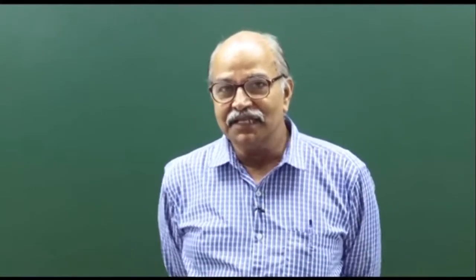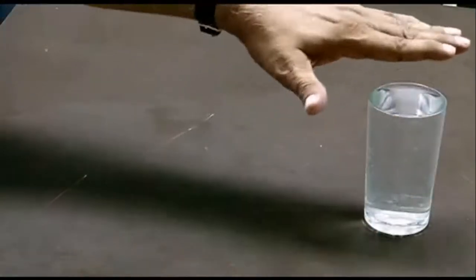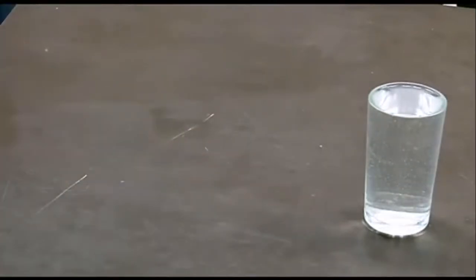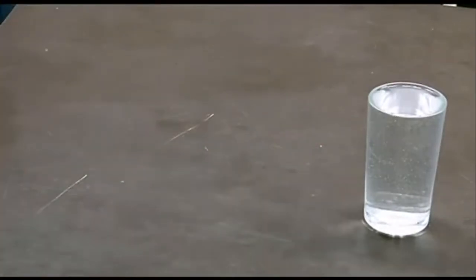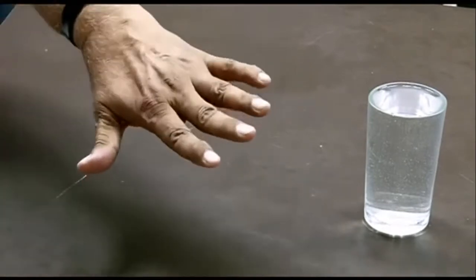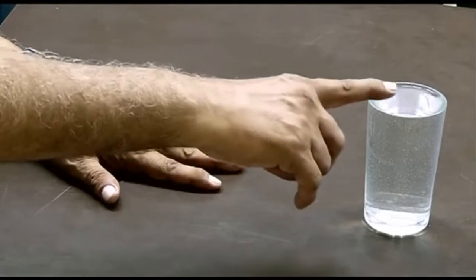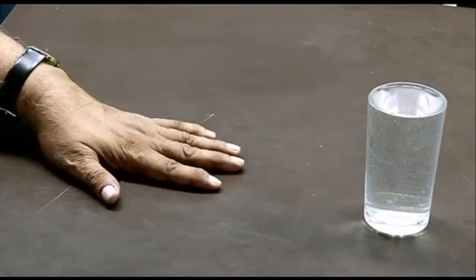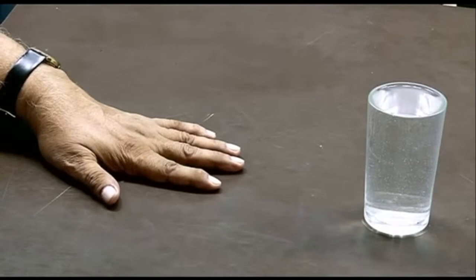Let's start with an activity. You see here a tumbler filled with water placed on this table. The table is at rest, the tumbler is at rest, and the water surface is at rest — at least visibly everything is at rest. Now look at my hand: I am putting my hand here and doing something on the table. Do you see some motion on the surface of the water? Do you see any motion in my hand or on the table?